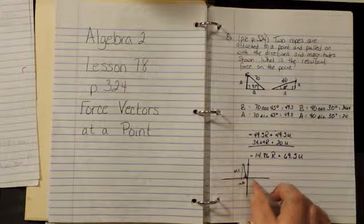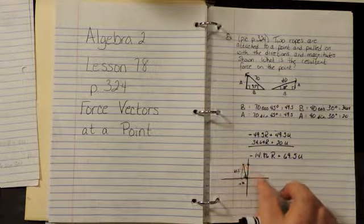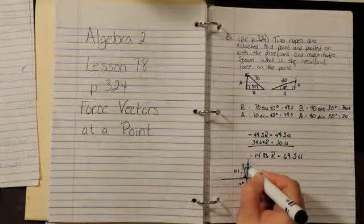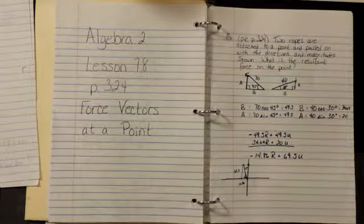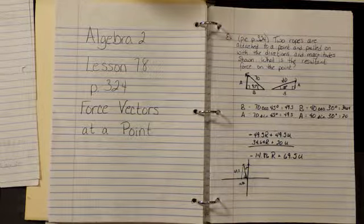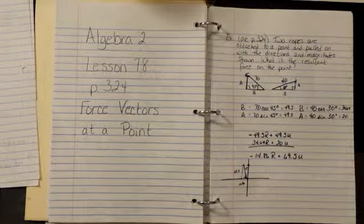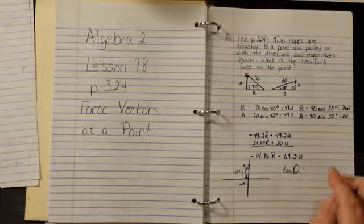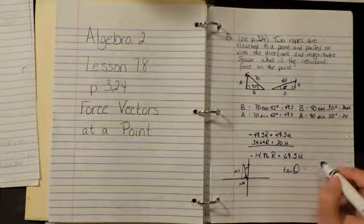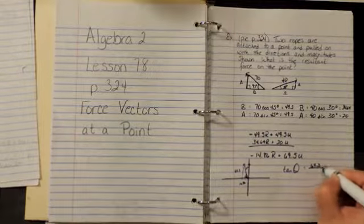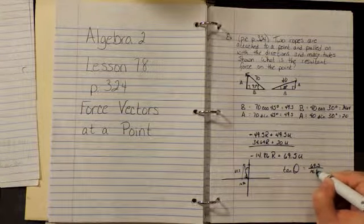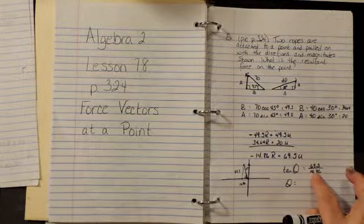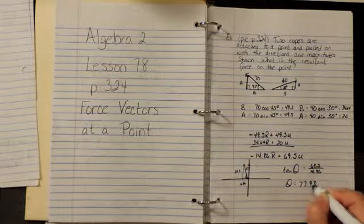Remember, we're taking the theta from the x, not from the y. We're going to take the theta from the x, and this is our resultant force. So to find the angle, we're going to take the tangent. The tangent of theta is the opposite over the adjacent. So 69.5 over 14.86. So theta is going to equal the inverse tan of this fraction, which is 77.93 degrees.